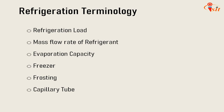Refrigeration Terminology. These terminologies are very important to understand further lectures and to calculate parameters in the refrigeration system. The first terminology is Refrigeration Load — the amount of heat which must be removed per unit time from a cold region. It is also known as Refrigeration Capacity, measured in tons of refrigeration (TR), designated as RE, and sometimes referred to as Refrigeration Effect.